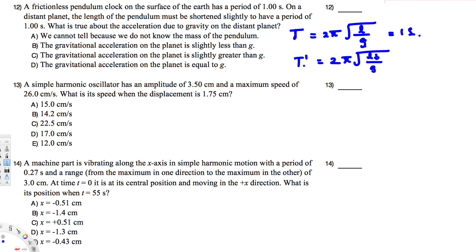If we have to reduce L to maintain the same period, it means the G value is also lower. For example, if the ratio is 2 over 10 and we reduce it to 1, we have to put 5 in the numerator to get the same ratio. So the gravity on the distant planet is less than Earth's gravity — that's why we have to reduce the length.